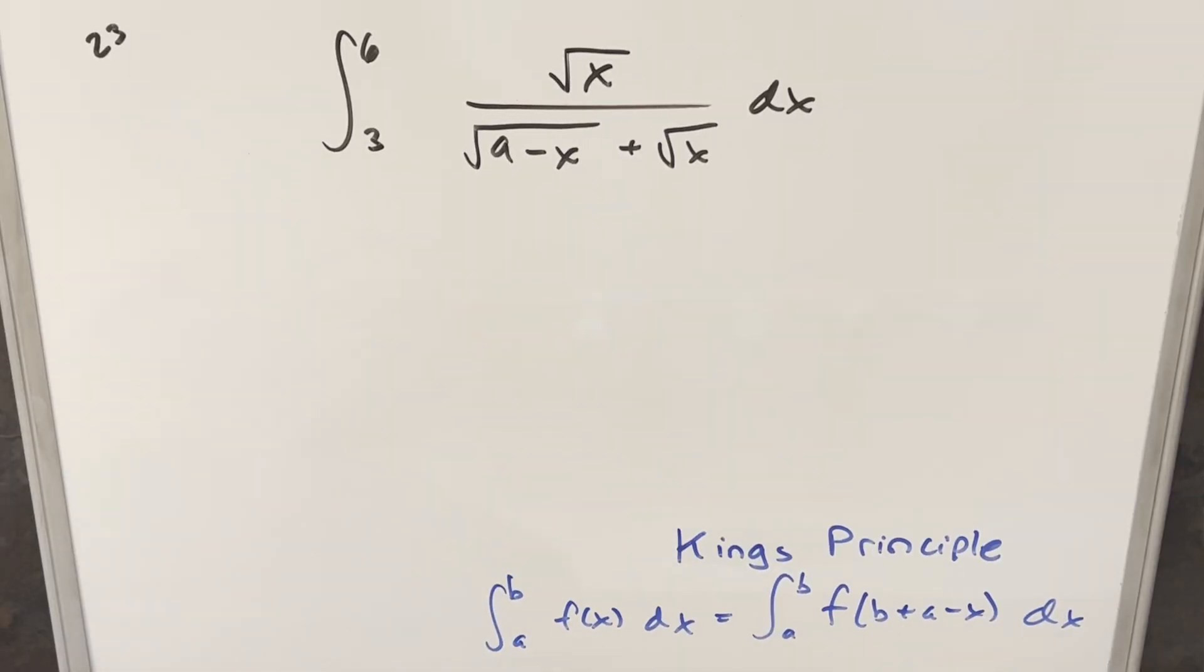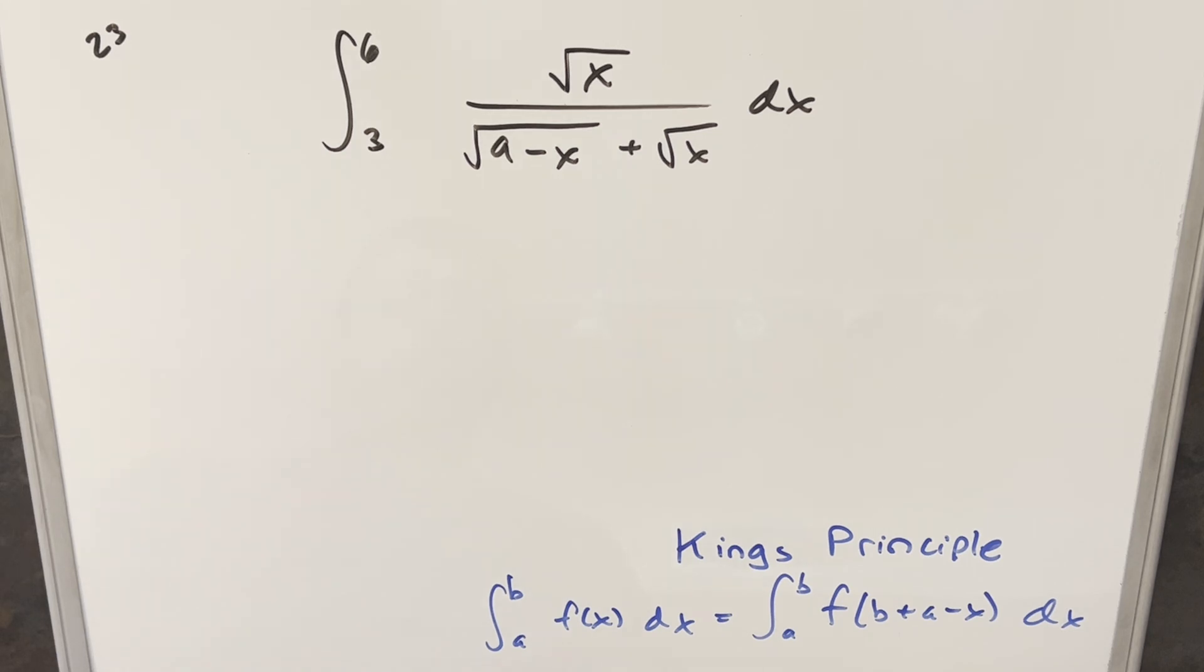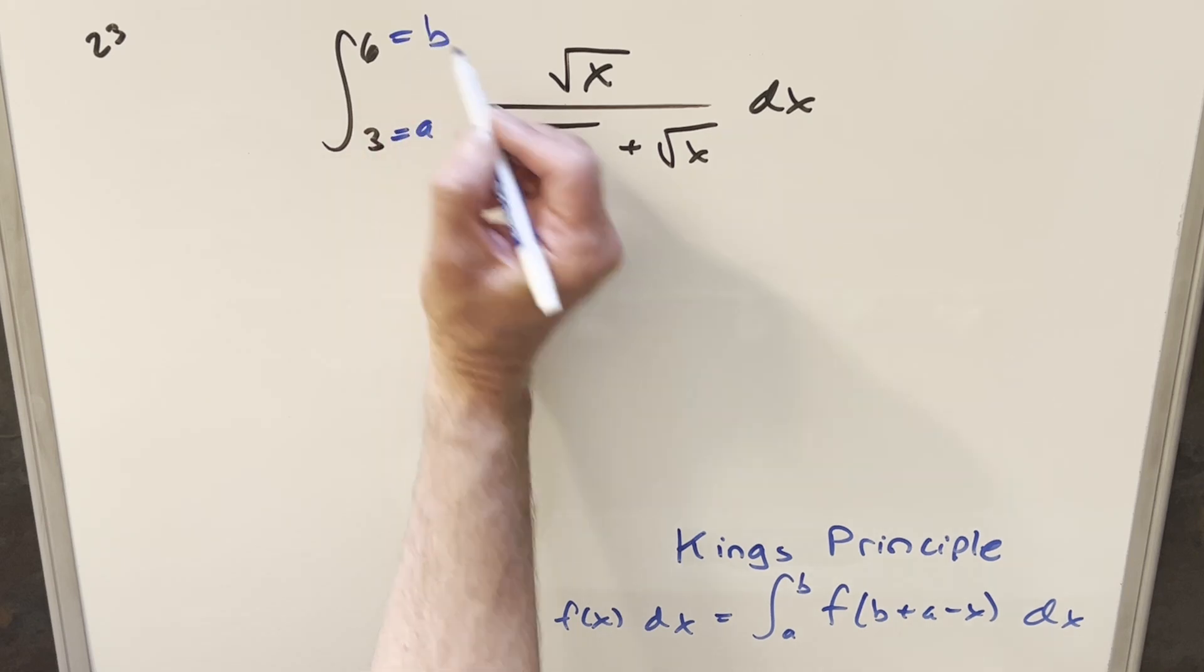Okay, now using King's principle with this, this is actually something you could do in like five seconds just looking at it once you're used to these. Let's just do it out with the steps using King's principle, which is going to be like a shortcut for our substitution. So looking at the bounds going from a to b for this, our a value is going to be three and our b value is going to be six.